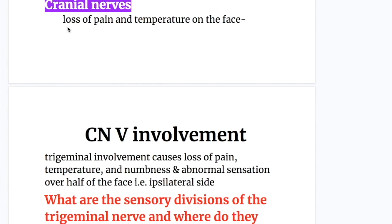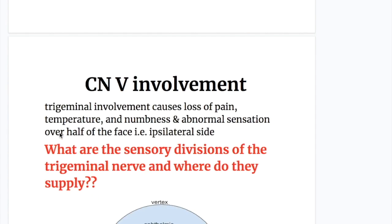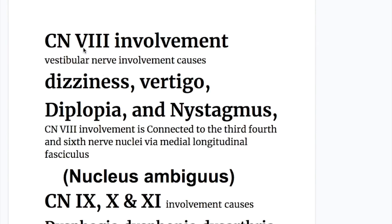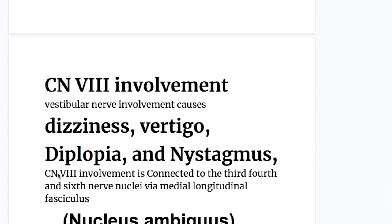Cranial nerve involvement in Wallenberg syndrome includes cranial nerve five, eight, and the nucleus ambiguus. Trigeminal involvement causes loss of pain, temperature, numbness, and abnormal sensation over the ipsilateral half of the face. Cranial nerve eight — vestibulocochlear — causes dizziness, vertigo, diplopia, and nystagmus. Cranial nerve eight is connected to the third, fourth, and sixth cranial nuclei — oculomotor, trochlear, and abducens — via the medial longitudinal fasciculus, as discussed in other videos on lateral and vertical gaze palsy.